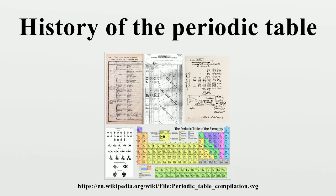Alexandre-Émile Béguyer de Chancourtois, a French geologist, was the first person to notice the periodicity of the elements, similar elements occurring at regular intervals when they are ordered by their atomic weights. In 1862, he devised an early form of periodic table, which he named vis tellurique, after the element tellurium, which fell near the center of his diagram, with the elements arranged in a spiral on a cylinder by order of increasing atomic weight.